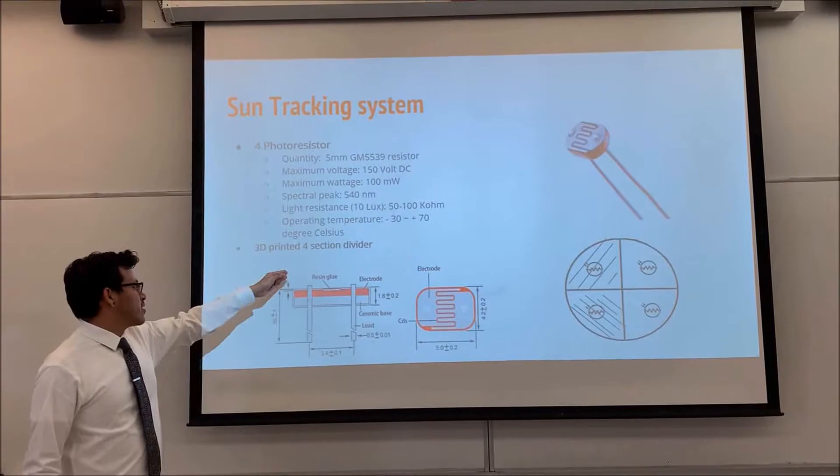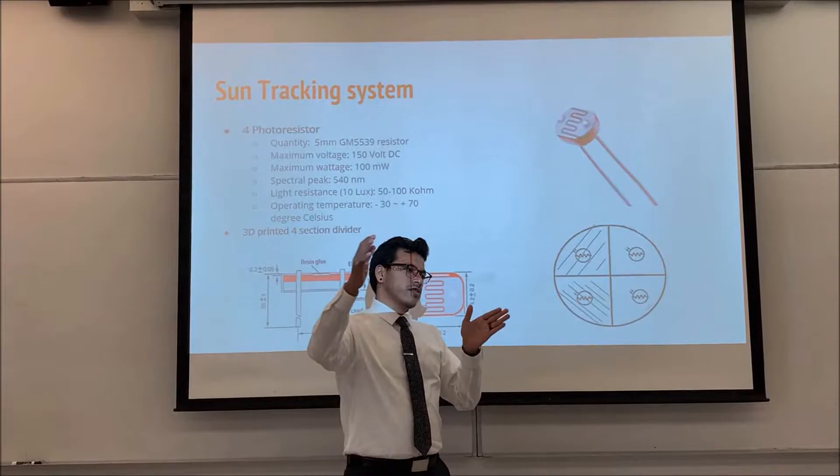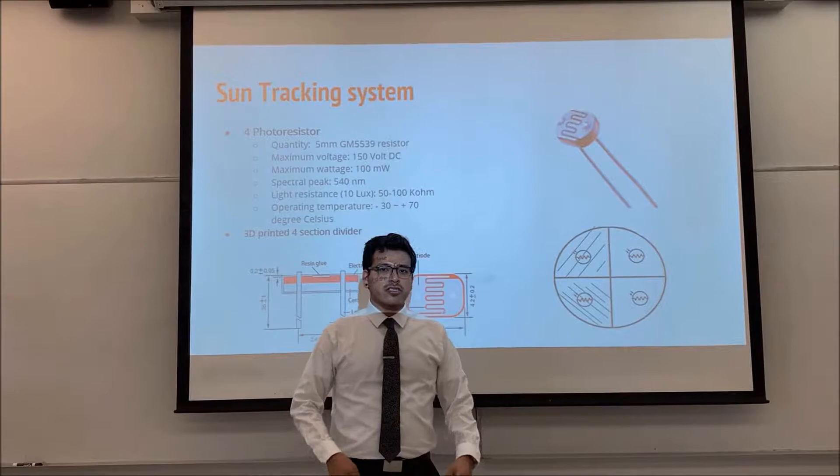This is our sun tracking system. As you can see, we decided to do a 3D printing with forced section divider. The dividers, what they do is that when the sun is not hitting correctly into the solar panel, it will create a shade.